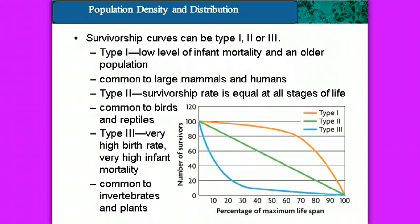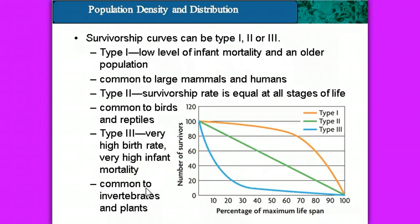Type 2 — the survivorship rate is equal at all stages of life. That's the green line right here, and it's really common to birds and reptiles. In type 3, that's the blue line — type 3 has a very high birth rate and a very high infant mortality rate. That's really common to most of our invertebrates and plants. You can plant a whole bunch of seeds in the garden, but usually you only get a couple of plants that actually grow.